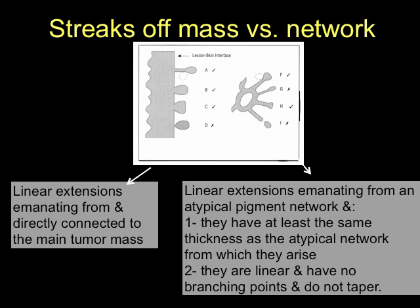Streaks can emanate directly from a solid tumor mass or from a network at the periphery of the tumor. The schematic on the left shows streaks coming off a tumor mass. The structures labeled A, B, and C are all considered to be streaks, while structure D is not — it is a peripheral globule. The schematic on the right shows streaks emanating from an atypical pigment network; lines labeled F and H are considered streaks.